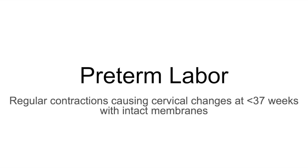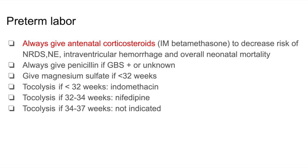Let's take a closer look at preterm labor. Preterm labor is defined as regular contractions causing cervical changes at less than 37 weeks gestation with intact membranes. The management of preterm labor is very high yield. You must always give steroids such as dexamethasone to decrease the risk of intraventricular hemorrhage and overall neonatal mortality. You should always give penicillin if the group B strep status of the mother is positive or unknown.